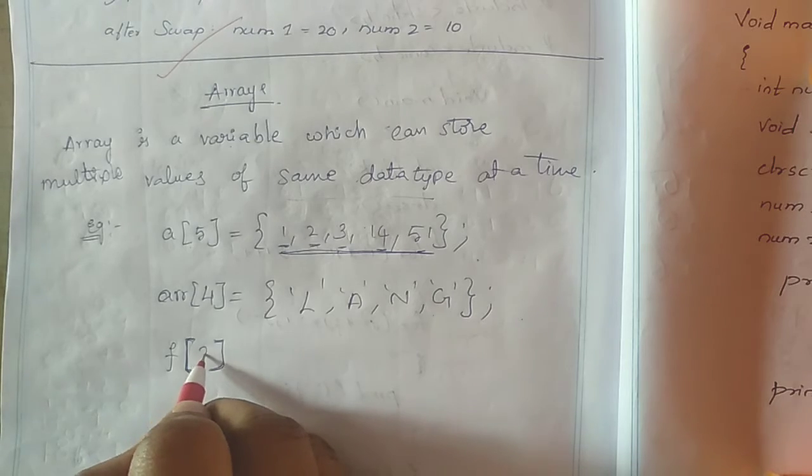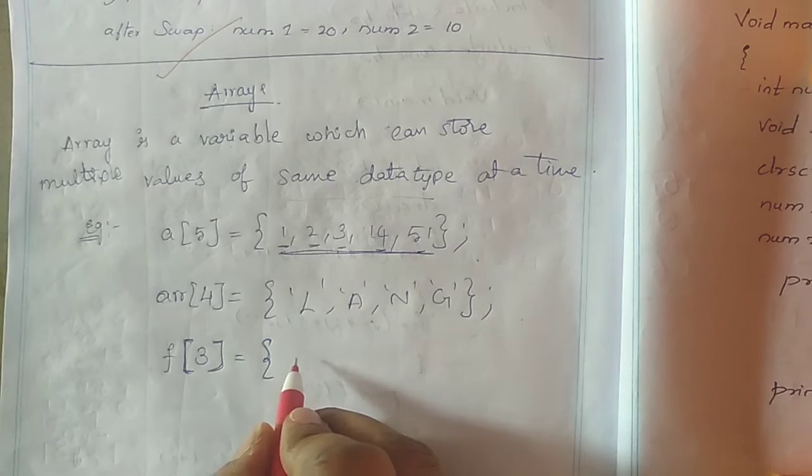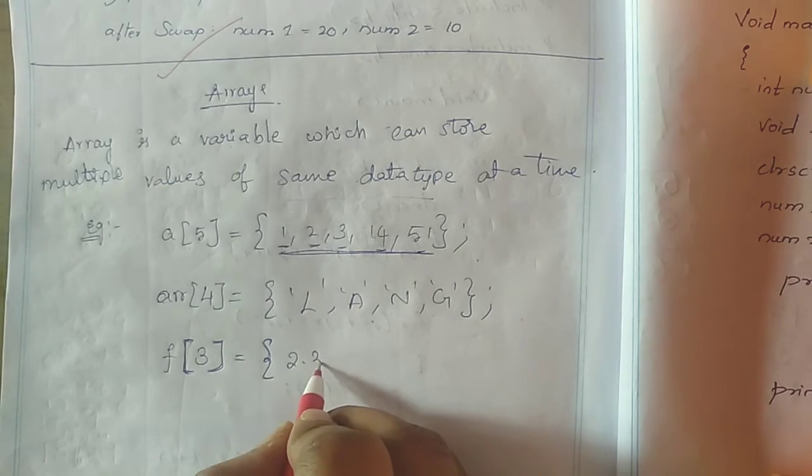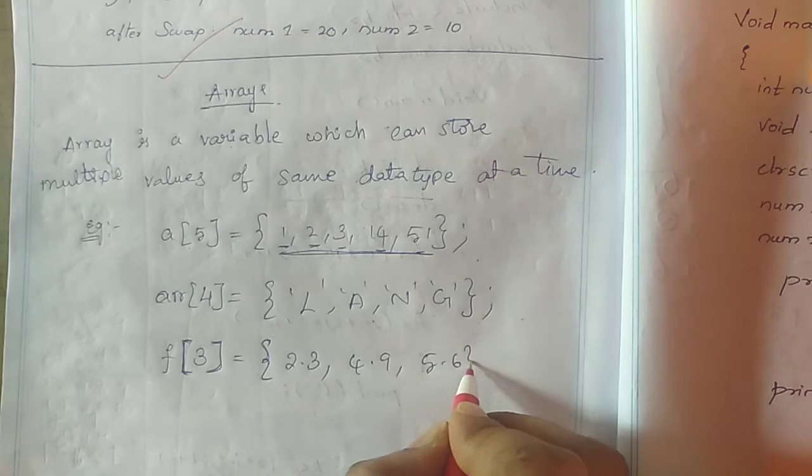In this case, I am storing 3 values, 3 data values: 2.3, 4.9, and 5.6.